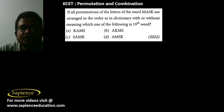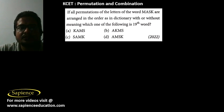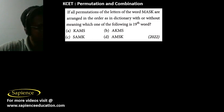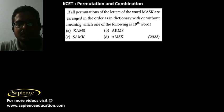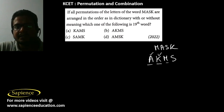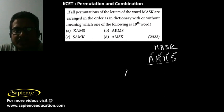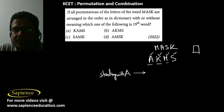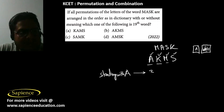Here it is told that all permutations of the letters of the word MASK are arranged as in a dictionary, with or without meaning. Which is the 19th word? The alphabetical order of the letters in MASK is: A, K, M, S. So first come words starting with A, then K, then M, then S.